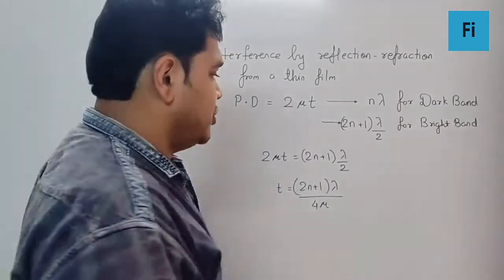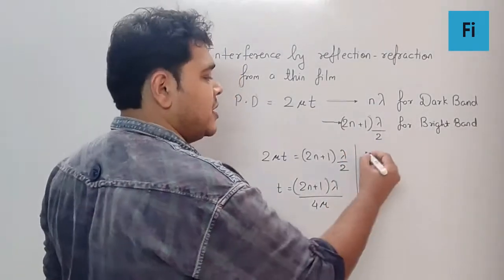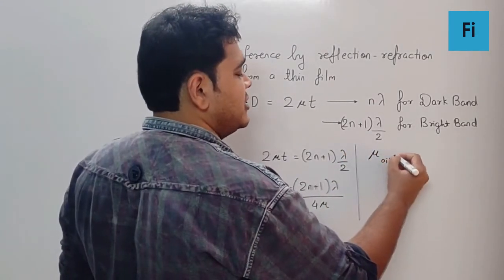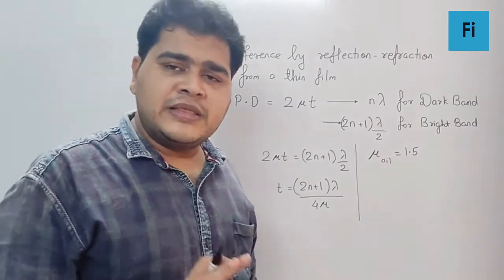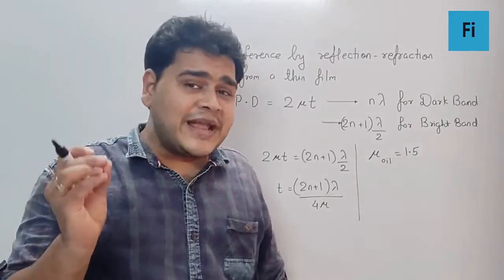So here the first thing I'm going to assume is the μ for oil. I'm taking it as approximately 1.5. The value is quite different than this, you can say it is 1.518. I'm taking a round value for our simplification of calculation. So μ of oil I'm taking it as 1.5.